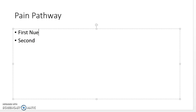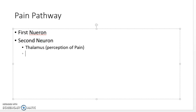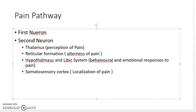Regarding the pain pathway: the first neuron is the afferent neuron acting like a receptor at the skin. The second neuron leads to the thalamus, where perception of pain occurs. After the thalamus comes the reticular formation for alertness and awareness. Above that, the limbic system and hypothalamus handle emotional and behavioral responses to pain. Finally, the somatosensory cortex handles localization of the pain.